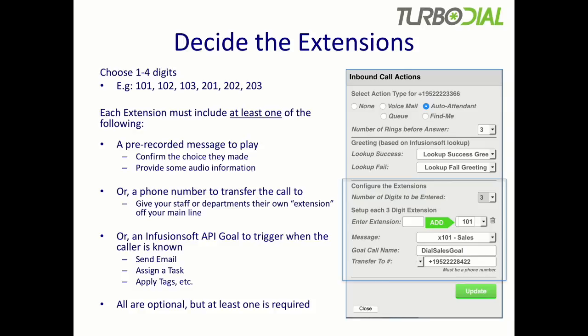Next, you're going to decide your extensions. You can have extensions anywhere from one to four digits long; however, all of the extensions you create will be the same number of digits. So if you choose, for example, three digits, then all of your extensions will be three digits — in this case, 101, 102, 103, et cetera.